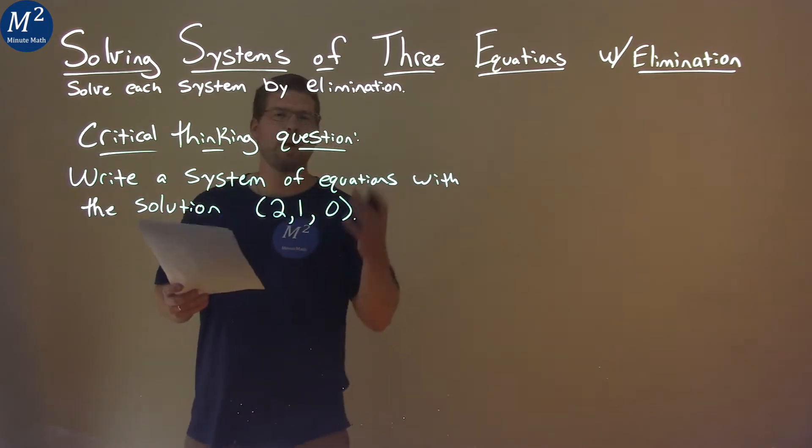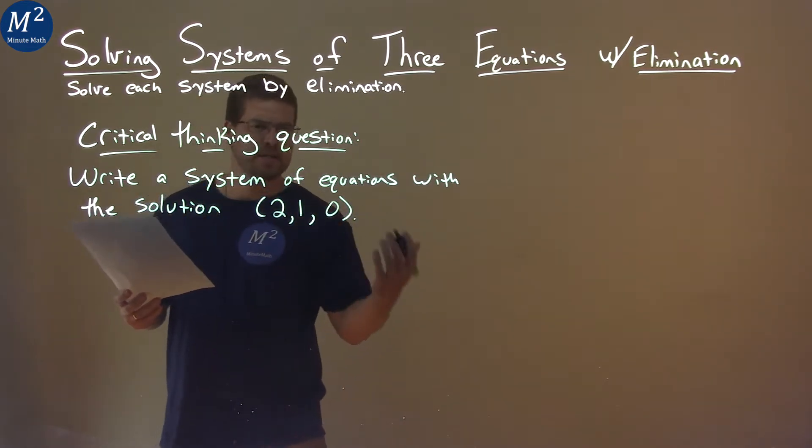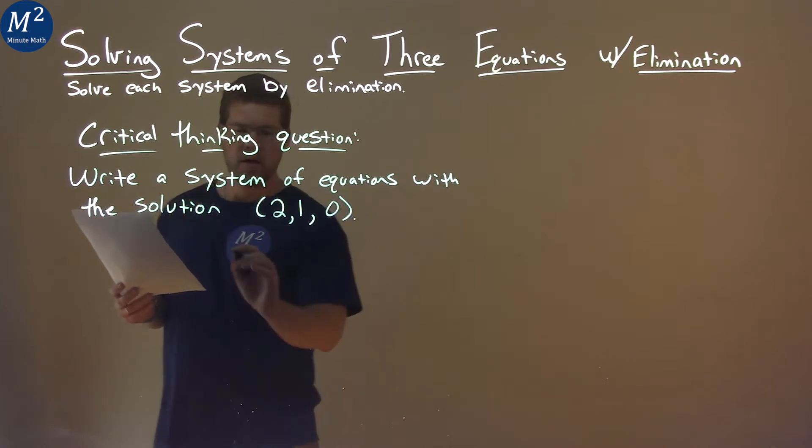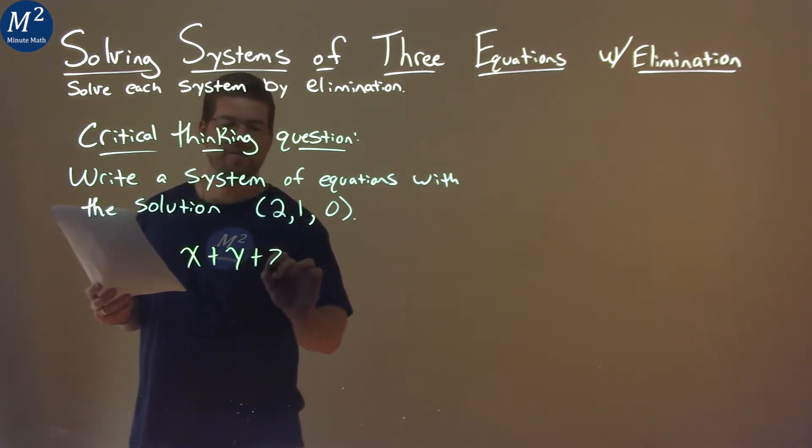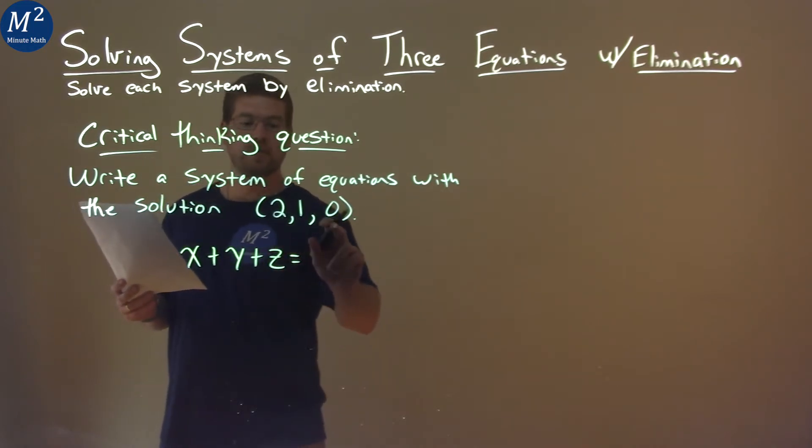So the way I like to, I'm giving my process here. I start off with the variables x, y, z, these three. I say, okay, x is 2, y is 1, and z is 0. So if we have x plus y plus z is equal to, well, 2 plus 1 plus 0 is 3.